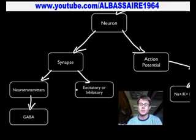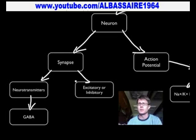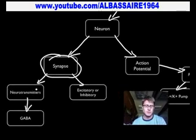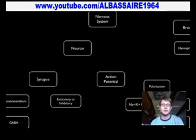Those neurotransmitter messages can either be excitatory — meaning the signal should keep going — or inhibitory, meaning the signal should stop right there. The synapse gives us a lot of control over what happens when a message gets to the next neuron.